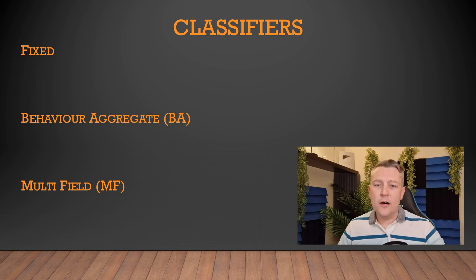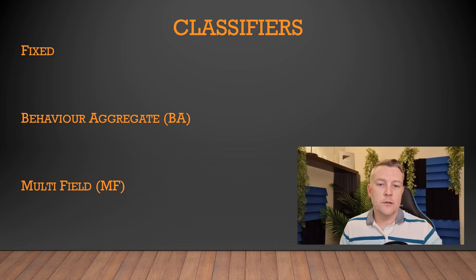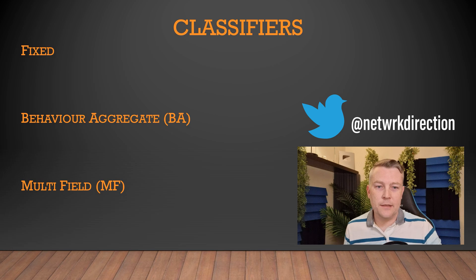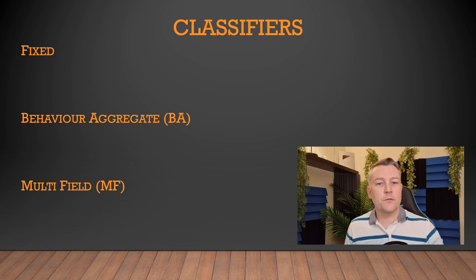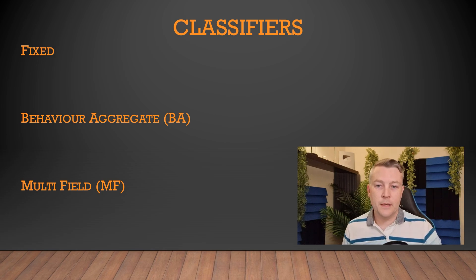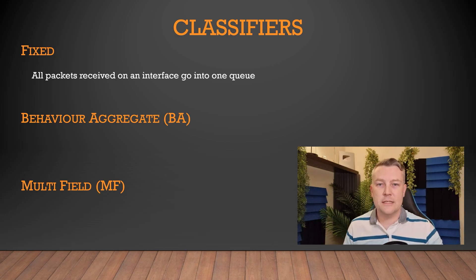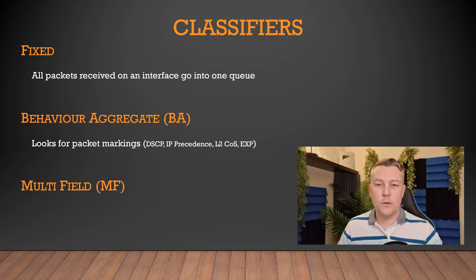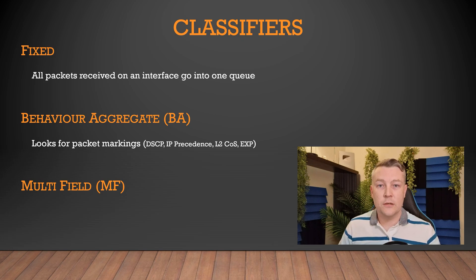Now, classifiers. How does the router decide which packet goes into each queue? Well, that's what the classifier does. The router will look at each packet and classify it based on some condition. Junos supports three types of classifiers: fixed, behavior aggregate, and multi-field. Fixed classifiers are very basic — all packets that arrive on a particular interface are placed in some specific queue. Behavior aggregate, or BA classifiers, look at markings within the packet headers, such as DSCP markings, IP precedence, layer 2 COS, MPLS EXP bits, and those sorts of things. It will assign the packet to the queue based on those markings.